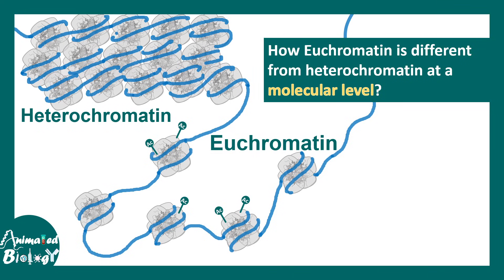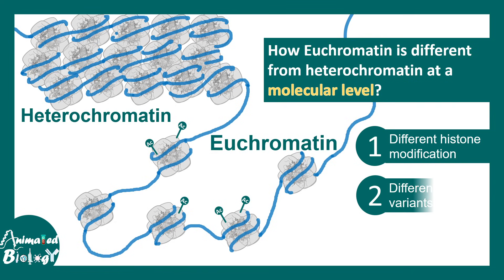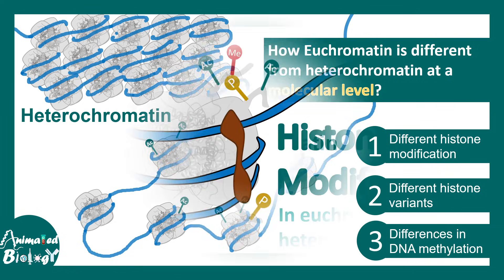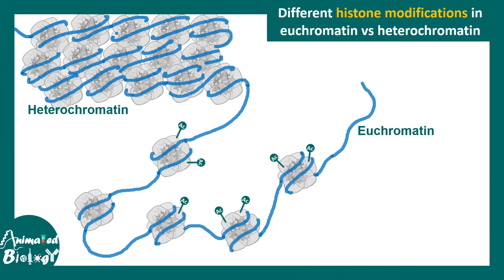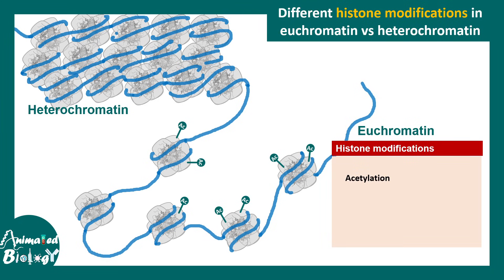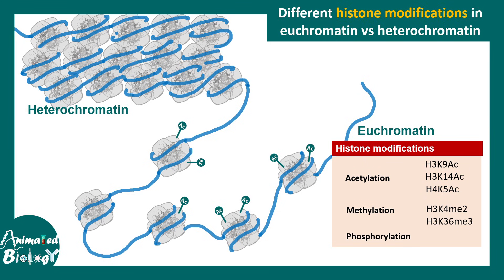How can molecular aspects discriminate between these two structures? There could be different histone modifications, histone variants, or differences in DNA methylation. For histone modifications, several are pro-euchromatin — they increase accessibility and make the chromosome looser. These include acetylation such as H3K9 acetylation and H3K27 acetylation. There are also activatory methylations such as H3K4me2 or H3K36me3, and phosphorylation such as H3S10 phosphorylation, all associated with euchromatin or transcriptionally active chromatin.